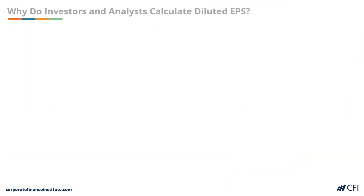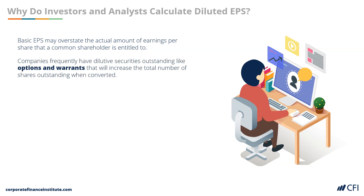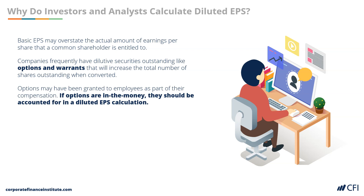Investors and analysts calculate diluted earnings per share because basic earnings per share can sometimes overstate the amount of earnings that common shareholders are entitled to. If a company has a complex capital structure that includes convertible securities, diluted earnings per share paints a more accurate picture. This will often be true because companies usually have diluted securities outstanding, like options and warrants, which would increase the total number of shares outstanding when converted. A simple example would be a company that offers employee stock options as part of their compensation package. If these options are in the money — that is, strike prices lower than the market price — they should be accounted for in a diluted earnings per share calculation.